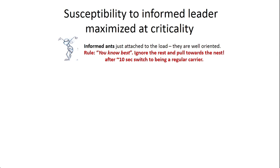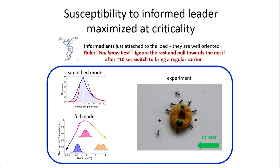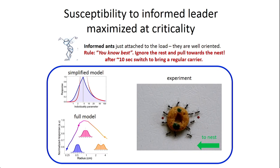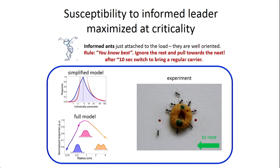We add informed ants to the model. Informed ants are ants that came from the outside, are well-oriented, and just attach to the load. The rule is: you know best, others don't know, so ignore them, attach, and pull to the nest. After about 10 seconds, you consider yourself lost also — this comes from experimental measurements — and become a regular carrier following the rules as before. In the simplified Ising model, taking n to infinity, you get a divergence of the response. For finite systems, you still get a peak. In the full model, we get the same kind of peak. This ant is not interacting with the other ants while approaching — she's just looking for a place to attach — and once she attaches, because the other ants are placed at this critical position, she can get control of the whole system.